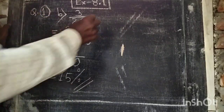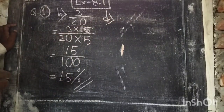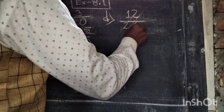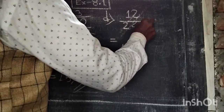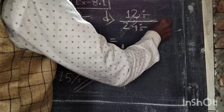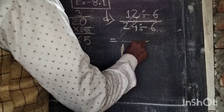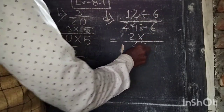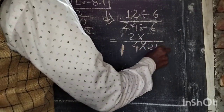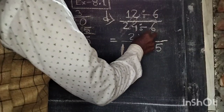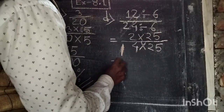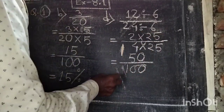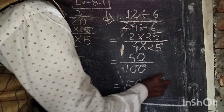Next, Part D: 12 by 24. After cancelling by dividing by 6, we get 2 in the numerator and 4 in the denominator. The denominator should be multiplied by 25 to get 100, so the numerator is also multiplied by 25 to get 50. So 12/24 equals 50 percent.